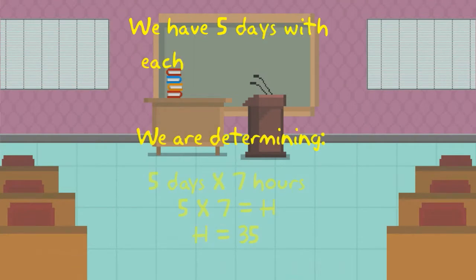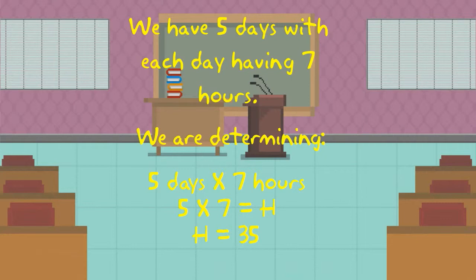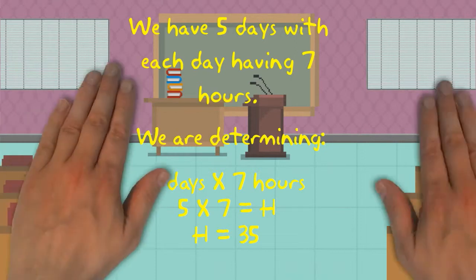We have determined we have five days with each day having seven hours. We determine that we'll be multiplying. So five days times seven hours, or five times seven, equals H, with H, or hours, equaling 35.